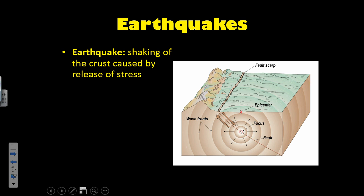Earthquakes are a buildup of pressure along a fault line. We have pressure because we have one side of the fault trying to move one way, and the other side moving the other way, and they're uneven, and they're jagged, and they catch, and they build up all of this stress. It's like a rubber band stretching — you can only stretch the rubber band so far, and eventually it will break, releasing that energy, and that's in the form of an earthquake.